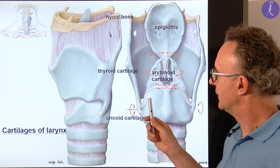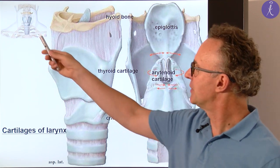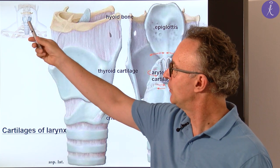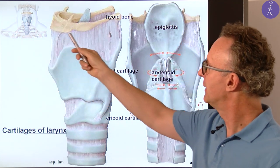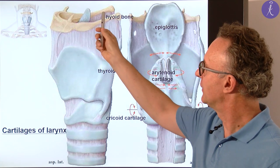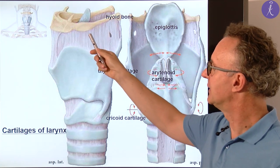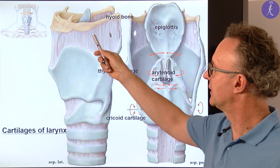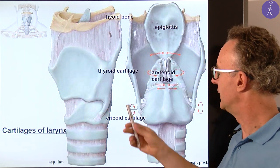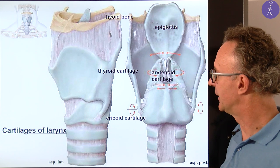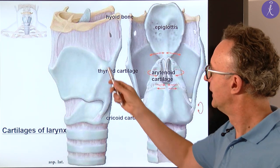First I'd like to describe the skeleton of the larynx. Here you see on the neck a schematic drawing with these elements. We have an arch-like bone on the top — this is the hyoid bone and is not part of the larynx. Below in light blue you see the laryngeal cartilages, the major cartilages at least.